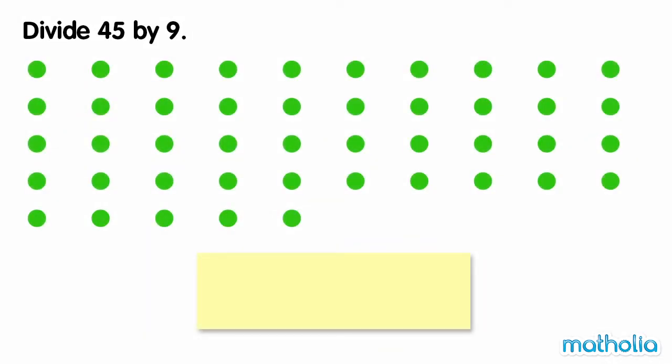Divide 45 by 9. There are 45 dots. To divide by 9, let's make groups of 9 dots and then count the total number of groups.